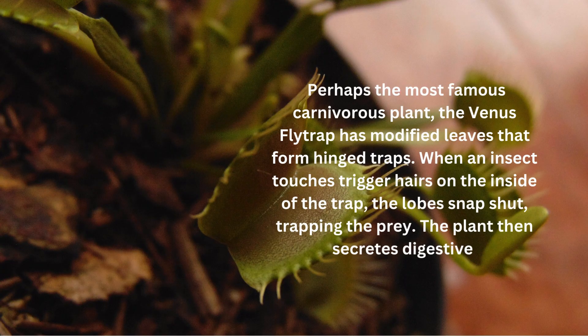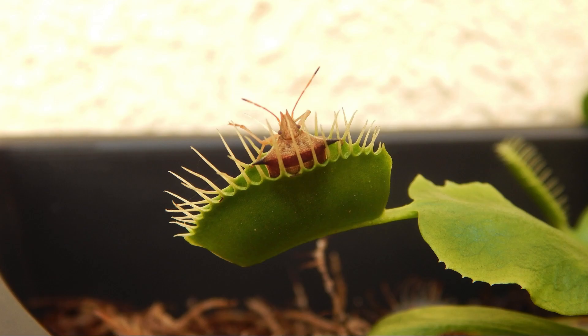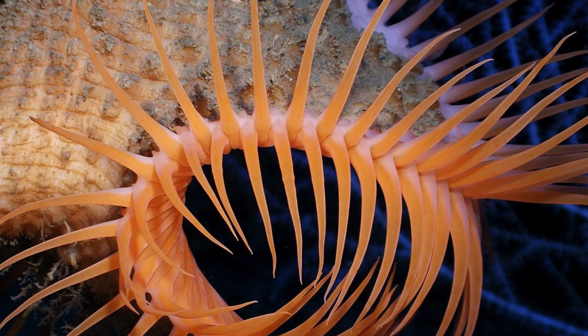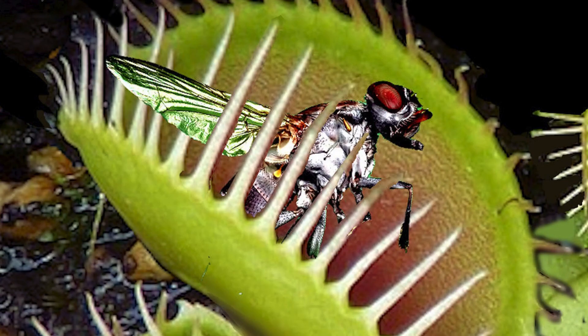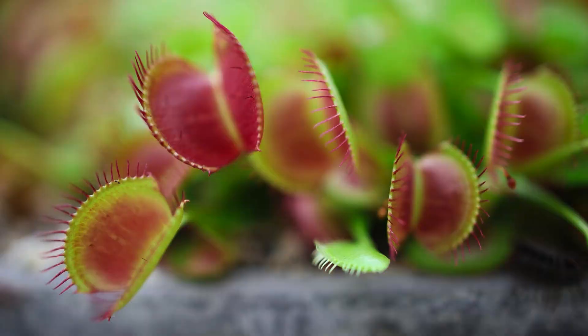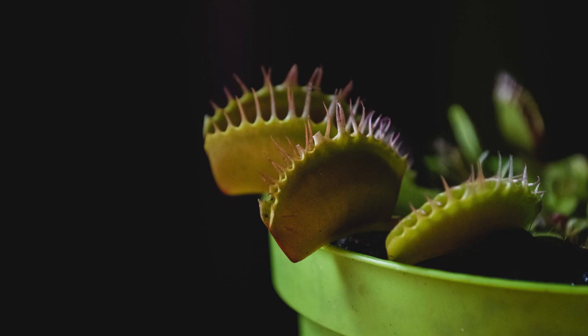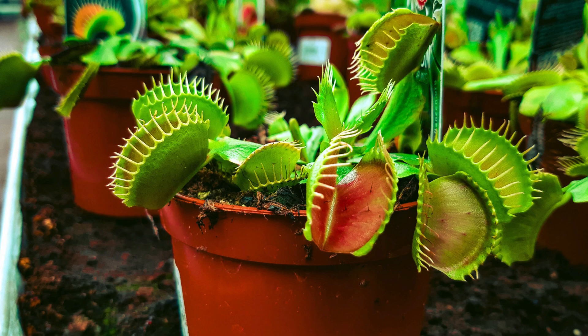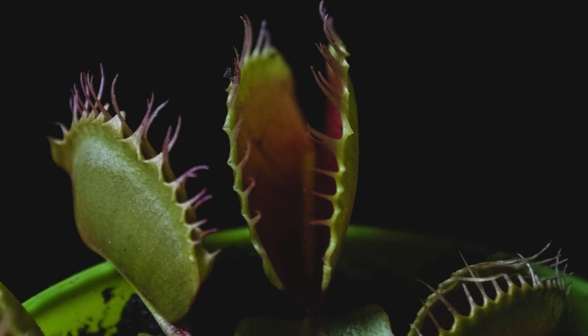Known for its unique trapping mechanism, the plant lures and captures insects with specialized lobes that snap shut when triggered. This adaptation allows the Venus flytrap to supplement its nutrient intake from the nutrient-poor soils where it typically grows.